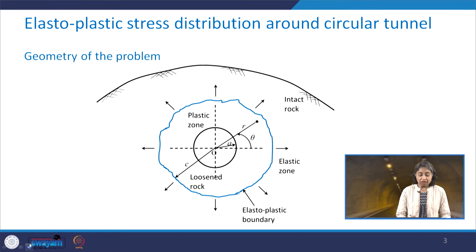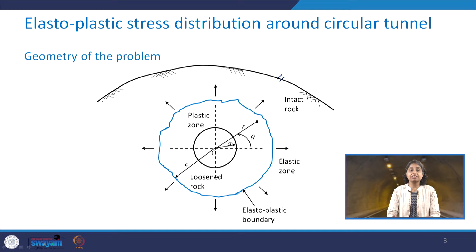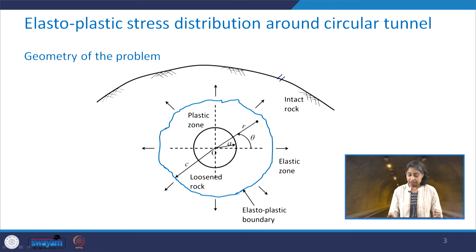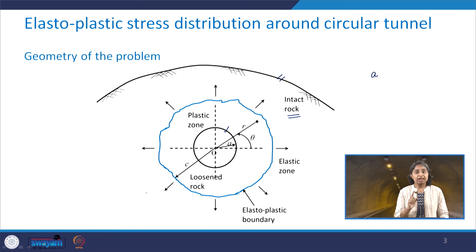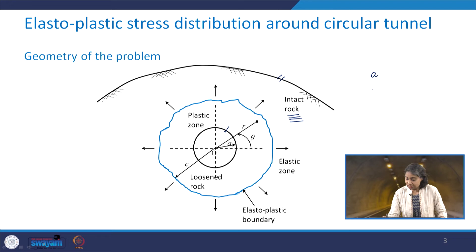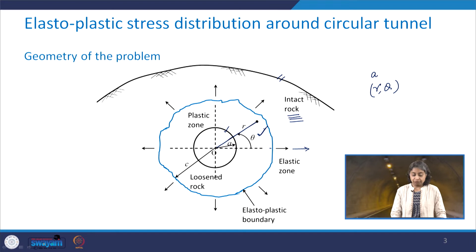Coming to the geometry of the problem: we have the ground surface, and this is assumed to be intact rock, which is not the situation in the field. In the field, what you get is the rock mass. But to start with, we make this assumption that the excavation is made in intact rock. The excavation is circular in shape having radius a as shown in the figure. Any point in the rock medium is represented by the coordinate system r, theta, where r is the radial distance and theta is the angle measured from the horizontal axis in the anti-clockwise direction.